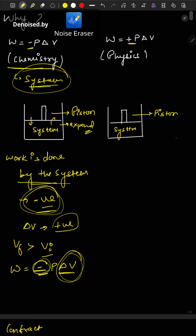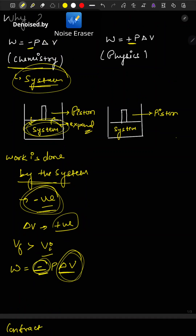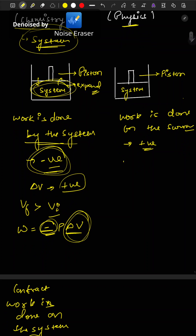In chemistry we observe the system, whereas in physics we observe the surrounding. In physics, when work is done on the surrounding, it is positive, so W = P·delta V. The system expands as it does work on the surrounding, so delta V is positive, giving a positive result.